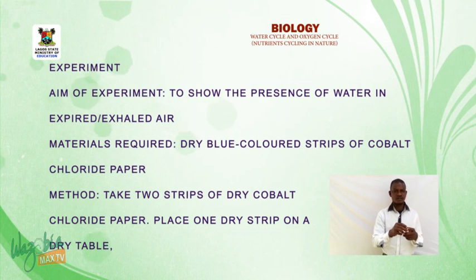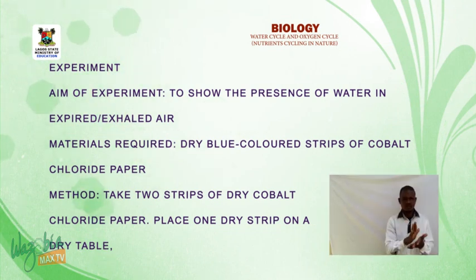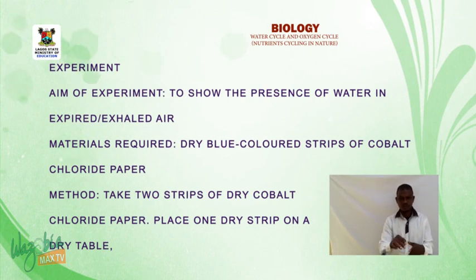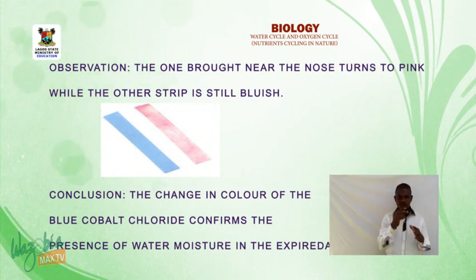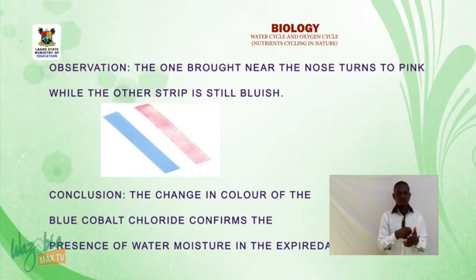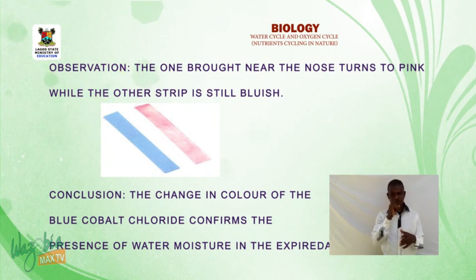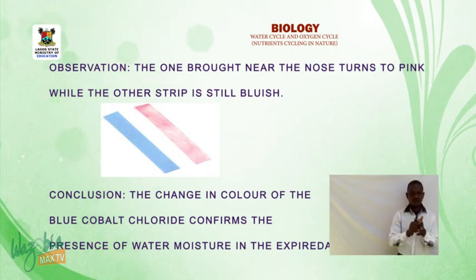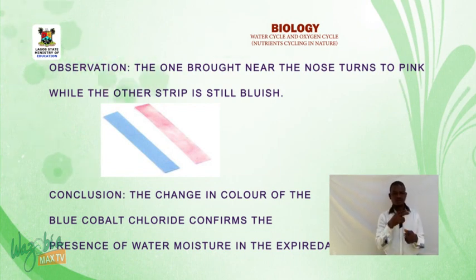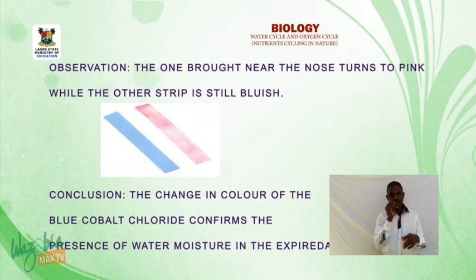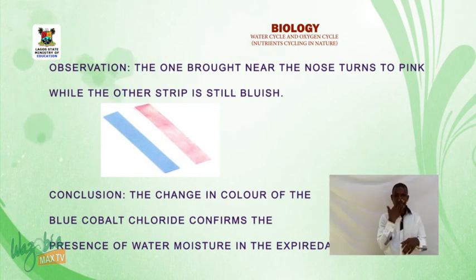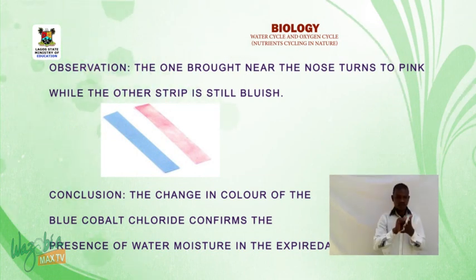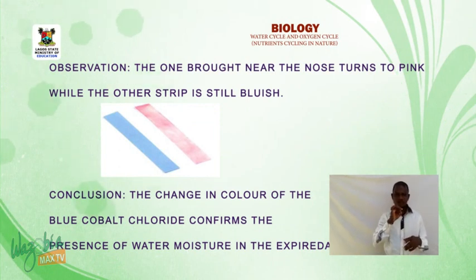Method: take two strips of dry copper chloride paper. Place one dry strip on a dry table. Hold the second strip in front of your nose and breathe out on it. Note your observation. Observation: the strip brought near the nose turns pink, while the other strip remains bluish. Conclusion: the change in color of the blue copper chloride paper confirms the presence of water moisture in the expired air.